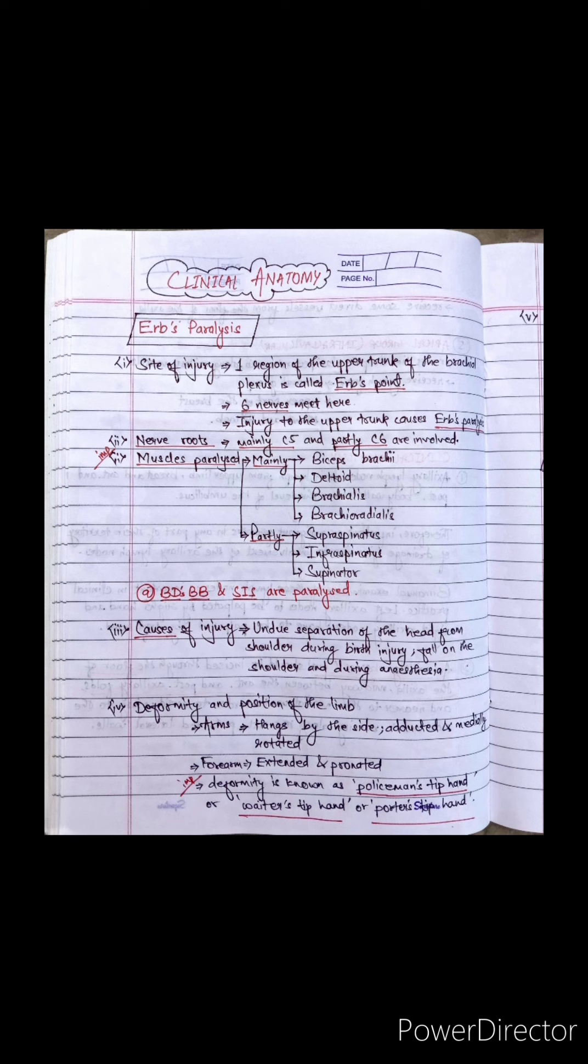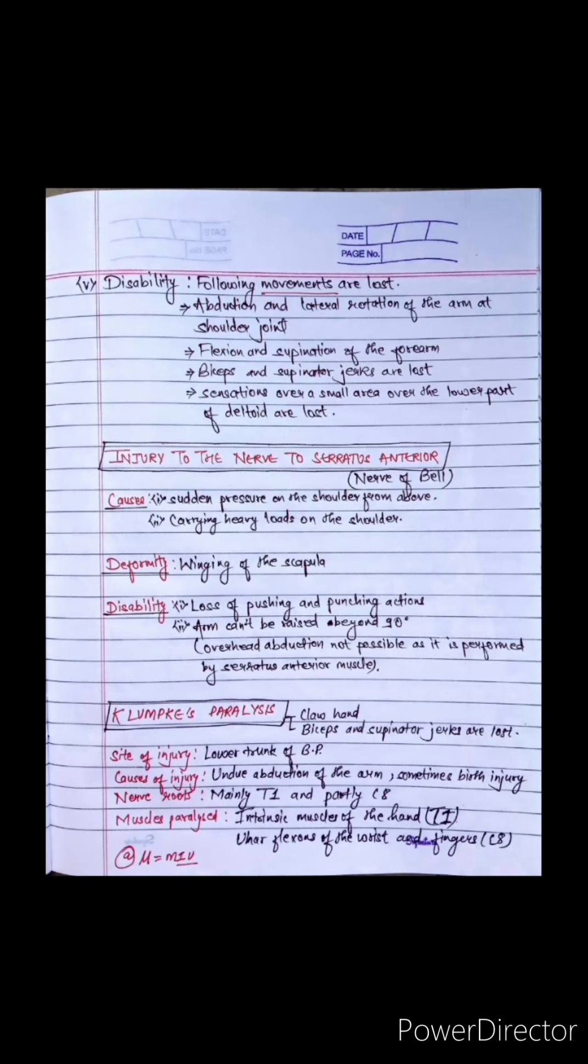Disability: the following movements are lost in Erb's paralysis - abduction and lateral rotation of the arm at shoulder joint, flexion and supination of the forearm. Biceps and supinator jerks are lost. Sensations over a small area of the lower part of deltoid are lost.